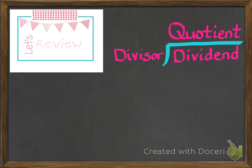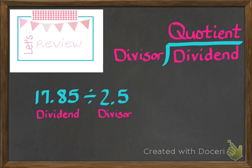When we're dividing, the number that's underneath the box is called the dividend. The number that you divide by is called your divisor, and that's the number on the outside of the box. The quotient is your answer. So if I were to give you the example of 17.85 divided by 2.5,